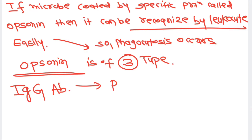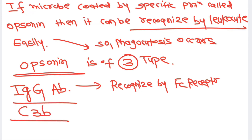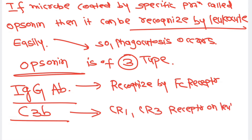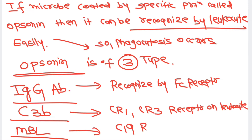The second opsonin is C3b, a complement breakdown product, which is recognized by complement receptors 1 and 3 present on the leukocyte. The third opsonin is mannose-binding lectin, which is recognized by the C1q receptor present on the leukocyte.